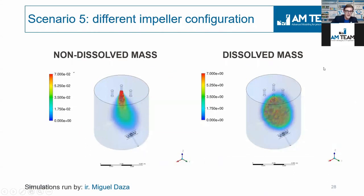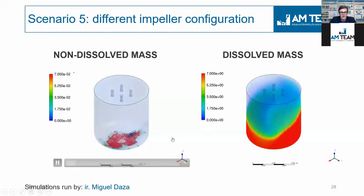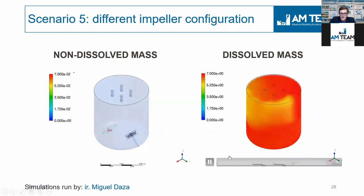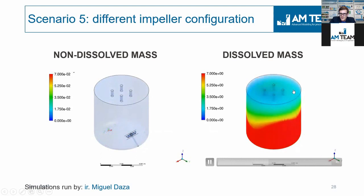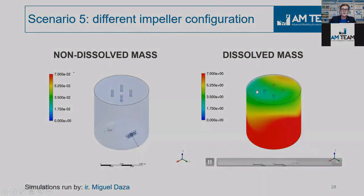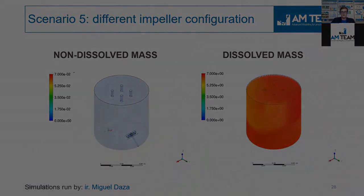Looking at the same kind of plots but for a changed impeller positioned at the bottom at an angle: you see the dissolved and non-dissolved mass, and studying this again, you see that the pattern is different. You get a kind of embracement — the bottom layer embraces the top layer. So hydrodynamics can be quite different if you change certain specifications.